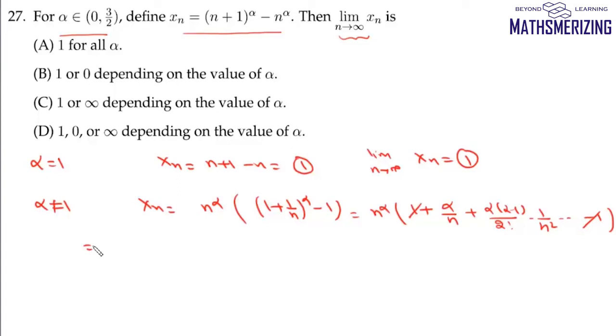We can write the limit as n tends to infinity of xn as limit n tends to infinity of alpha times n^(alpha-1) plus alpha(alpha-1)/2! times n^(alpha-2).